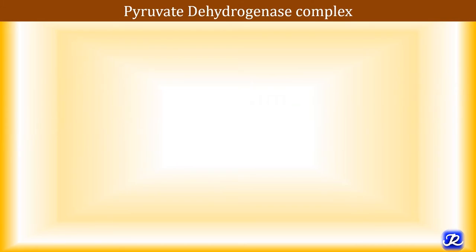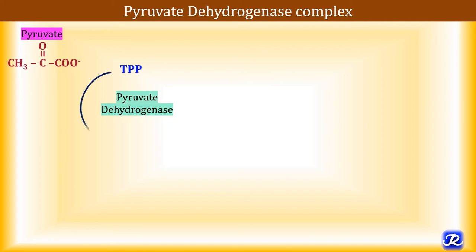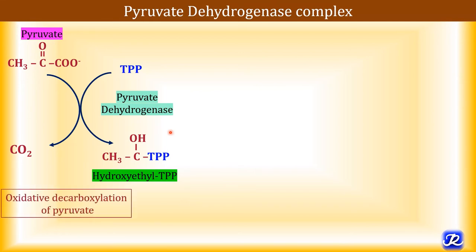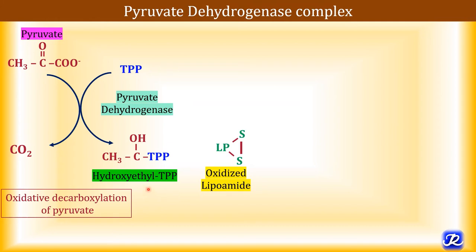In the first step, pyruvate binds with thiamine pyrophosphate — the coenzyme of pyruvate dehydrogenase — and CO₂ is released with formation of hydroxyethyl-TPP. This is the decarboxylation reaction catalyzed by pyruvate dehydrogenase, and hydroxyethyl-TPP is the intermediate formed.